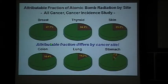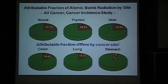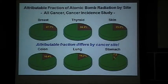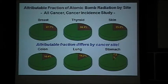The attributable fraction also differs by cancer site. Breast cancer is quite radiogenic, and almost one-third of breast cancers are caused by radiation. Stomach cancer is different — only a small proportion of stomach cancers is caused by radiation.